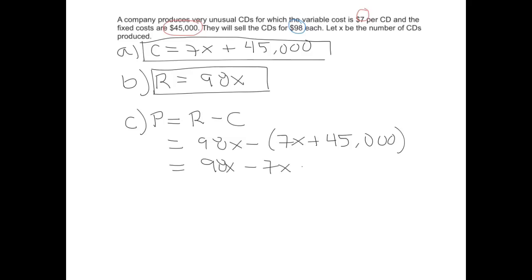And then minus 45,000. Okay. So then combining the 98 and the 7X is going to give us 91X minus 45,000. That is the profit, P.